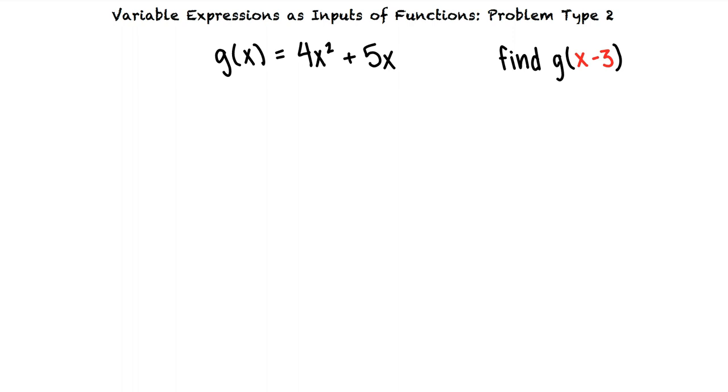So would the expression x minus 3 be the input of the function? That's right. We can think of our function as g of the input equals 4 times the input squared plus 5 times the input. We're asked to find g of x minus 3, so our input is x minus 3.